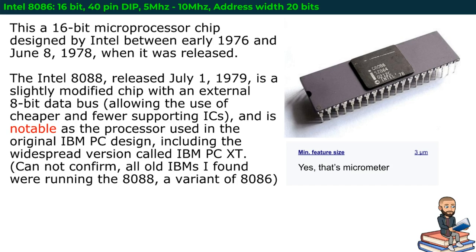At this time, this processor is notable as the processor used in the original IBM PC design. I want to make note here that I cannot confirm that because I did some additional research. All the old IBMs I found seem to have been running the 8088. To be technical about it, the 8088 is considered a variant of the 8086 because of their slight modifications.